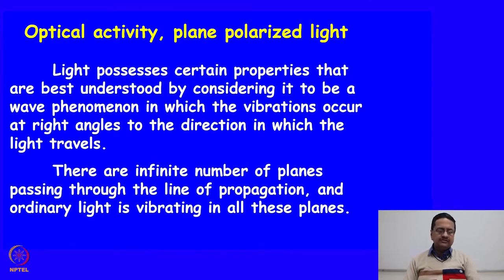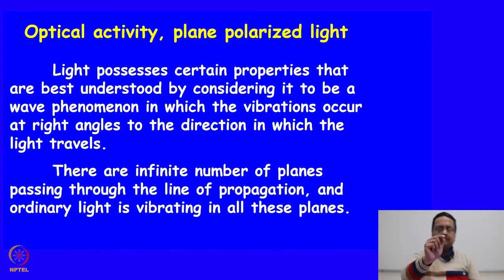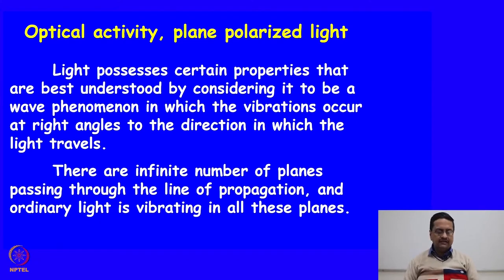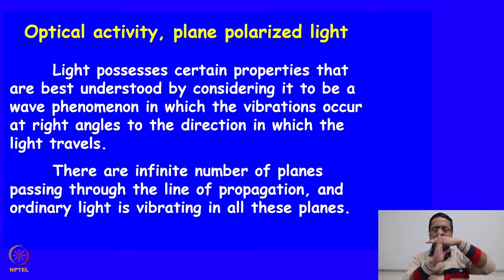Light possesses properties which are best understood by considering it to be a wave phenomena in which the vibrations occur at right angles to the direction in which the light travels. So if a light is travelling in this direction towards you, then the electric vectors are vibrating in the horizontal plane and the magnetic vectors are vibrating in the vertical plane, and there are infinite number of such planes in which the electric and magnetic vectors are vibrating in a perpendicular direction.